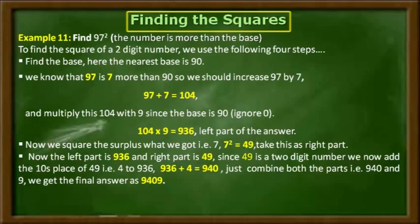Since the right part, 49, is a two-digit number and the number of zeros in the base is only one, the number of digits in the right part and the number of zeros in the base are not equal. So I am going to take the tens place digit of 49, which is 4, and add it to 936. By adding 936 with 4, I get the sum as 940. Now by combining both parts — 940 and 9 — we get the final answer as 9409.